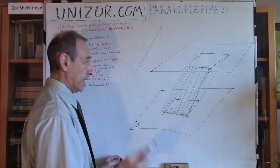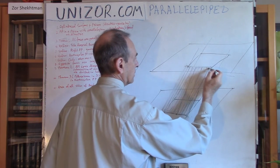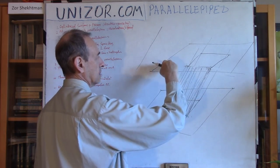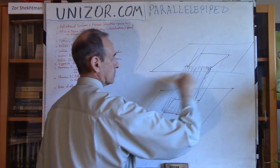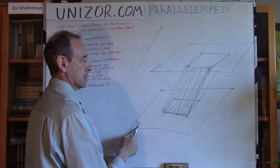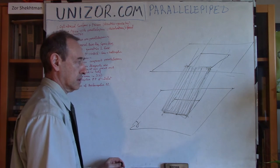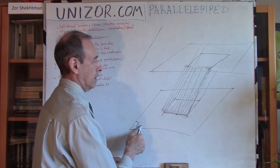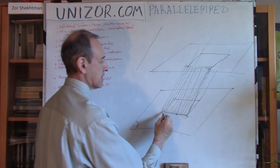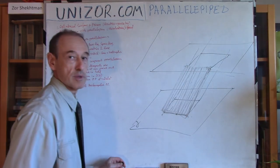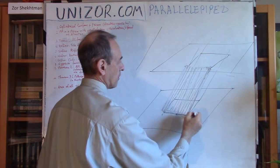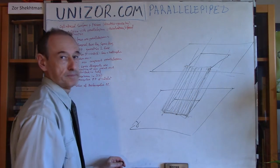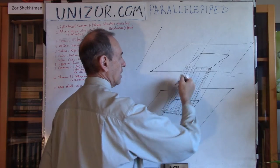This line is an intersection of the side plane and the top base. But the top base is parallel to the bottom base. We proved a theorem that if two planes are parallel and a third plane intersects both, then the lines of intersection are parallel to each other. So these two lines are parallel, and these two lines are parallel, which proves that this side face is a parallelogram — and that holds for each side face.